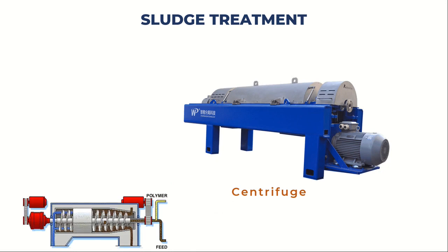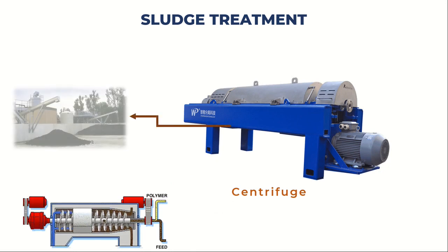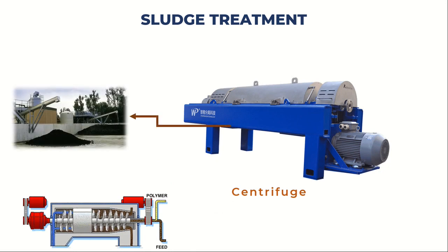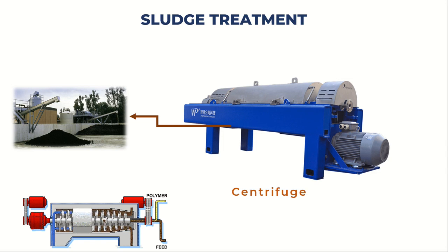We also have the centrifuge for dewatering the sludge. This high-speed spinning device utilizes centrifugal force to separate the water from the sludge. The sludge is introduced into the centrifuge, and as it rapidly rotates, the denser solids settle at the bottom while the water is discharged. The resulting dewatered sludge can then undergo further processing or be appropriately disposed of.